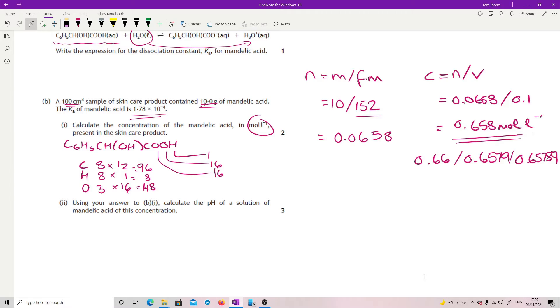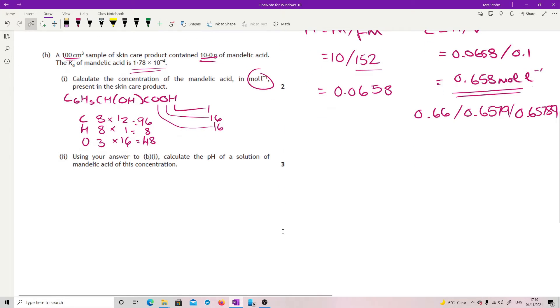Use your answer to B. So this is a follow-through mark in some ways. Calculate the pH of a solution of mandelic acid for this concentration. So you've got to look and see what have you got. So what you've got is the concentration of the acid. So I'm going to go to my data book and I'm going to look for the equations that will help me.